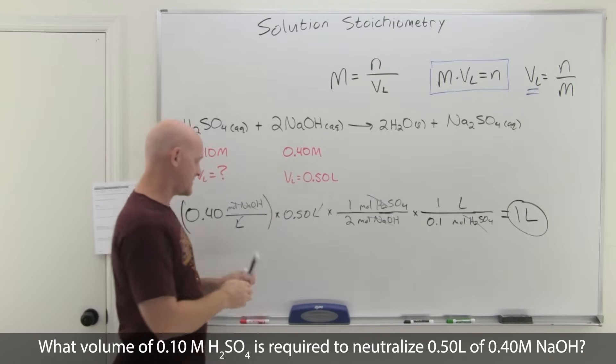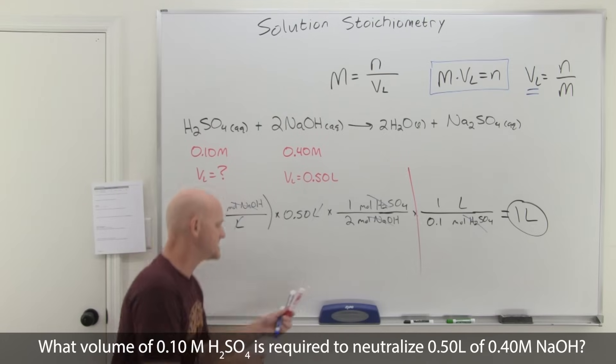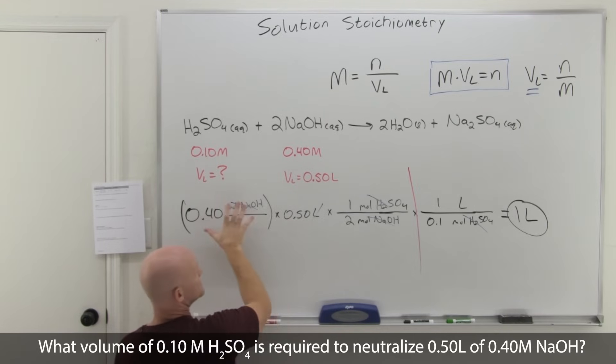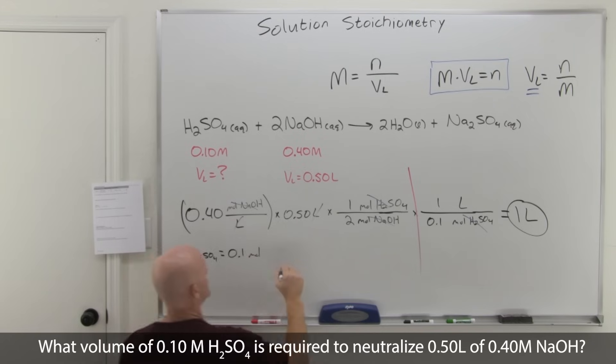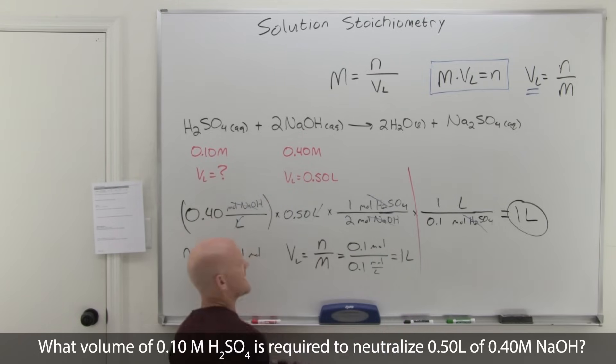We could have stopped right here and not continued with the dimensional analysis. It would have given us the moles of H2SO4. 0.4 times 0.5 is 0.2, 0.2 divided by 2 is 0.1. So the moles of H2SO4 is 0.1. Then the volume in liters equals moles over molarity, our equation on the upper right there, which in this case would have been 0.1 moles over 0.1 molar, which is moles per liter, which would have got us one liter that way as well.